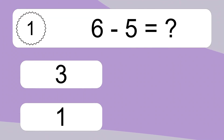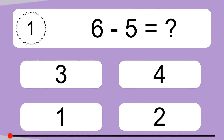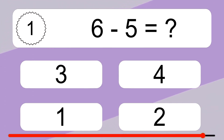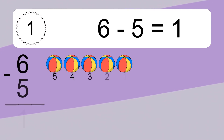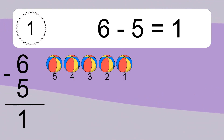6 minus 5 equals what? 6 minus 5 equals 1. Let's count it: 5, 4, 3, 2, 1.